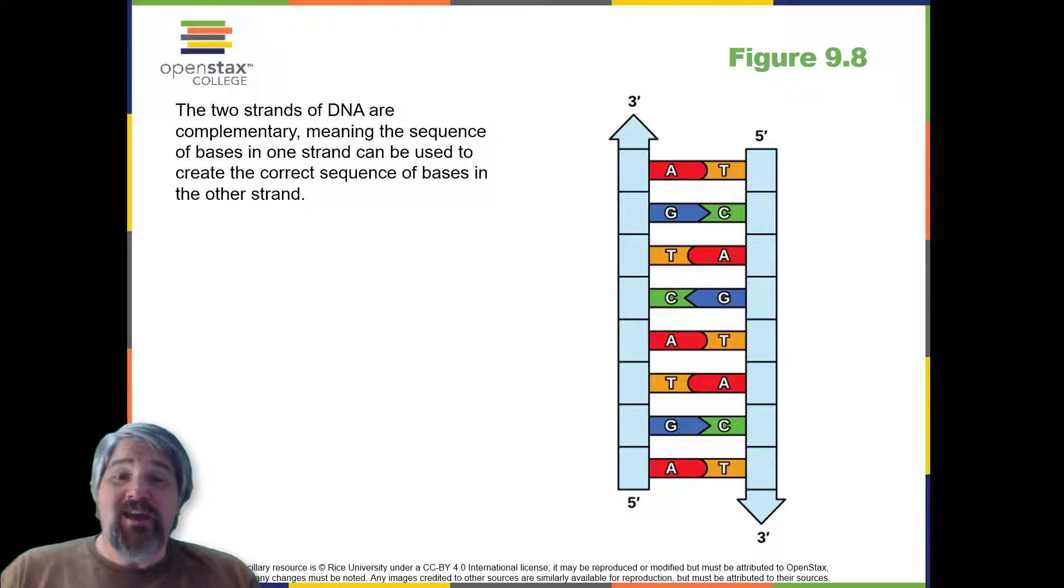When a cell divides, it is important that each daughter cell receives an identical copy of the DNA. This is accomplished by the process of DNA replication. The replication of DNA occurs during the synthesis phase, or S phase, of the cell cycle before the cell enters mitosis or meiosis. The elucidation of the structure of the double helix provided a hint as to how DNA is copied. Recall that adenine nucleotides pair with thymine nucleotides and cytosine with guanine. This means that the two strands are complementary to each other.